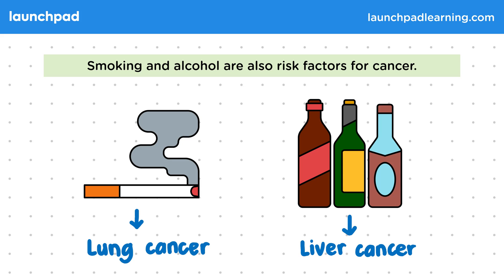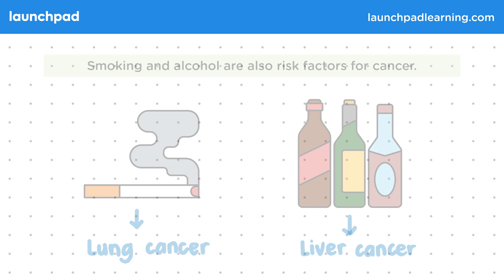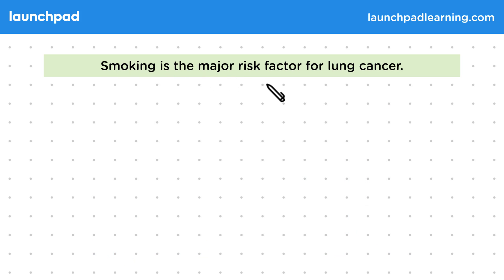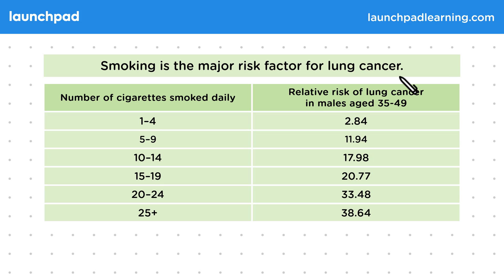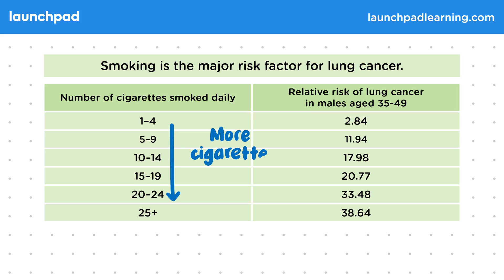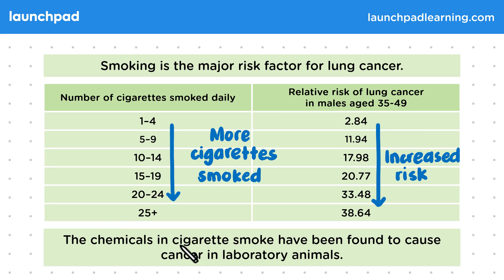So how do we know that smoking is a risk factor for cancer? Smoking is the major risk factor for lung cancer. This table shows the number of cigarettes smoked daily compared to the relative risk of lung cancer in males aged 35 to 49. You can see that as the number of cigarettes smoked daily increases, the relative risk of lung cancer also increases. The chemicals in cigarette smoke have been found to cause cancer in laboratory animals. This table, as well as the finding in laboratory animals, helps to show causation between smoking and lung cancer.